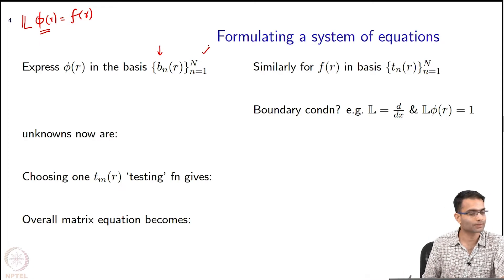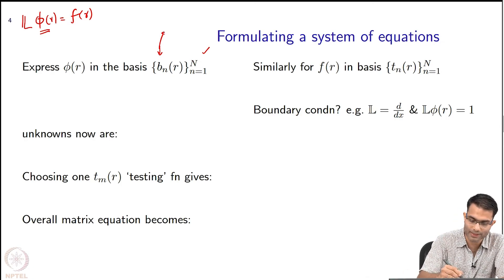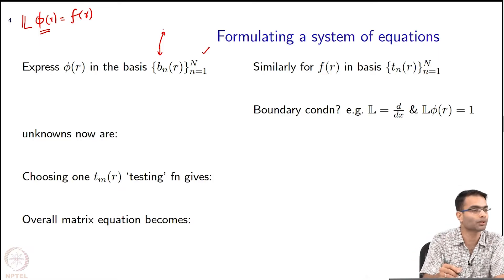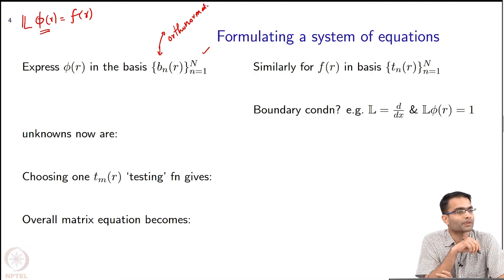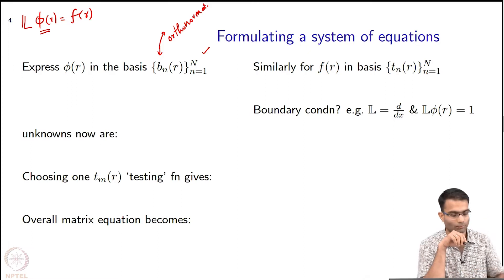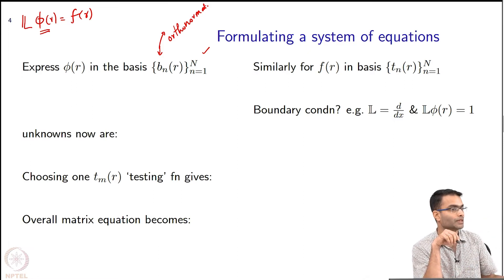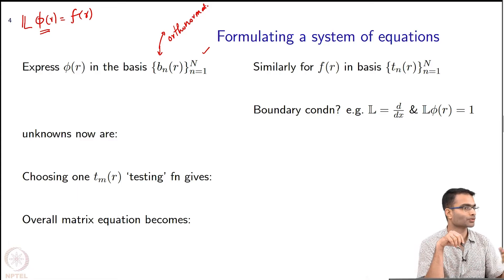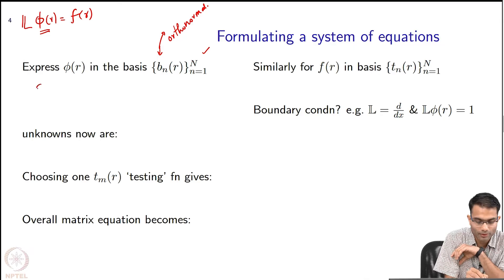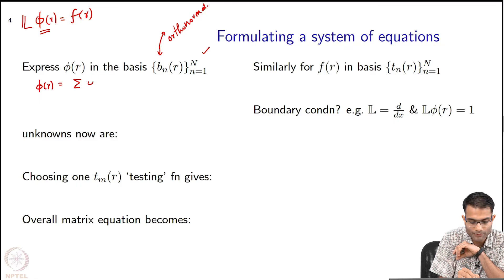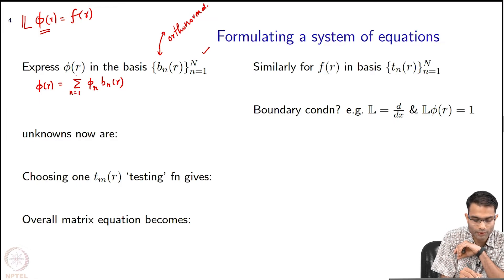Let us further assume that the b_n's and t_n's are orthonormal — they need not be, but it makes the math easier. The question is how do I write φ in terms of b? It is some constants — what are those constants? I will write φ(r) as a sum of constants φ_n times b_n(r), for n = 1 to N.